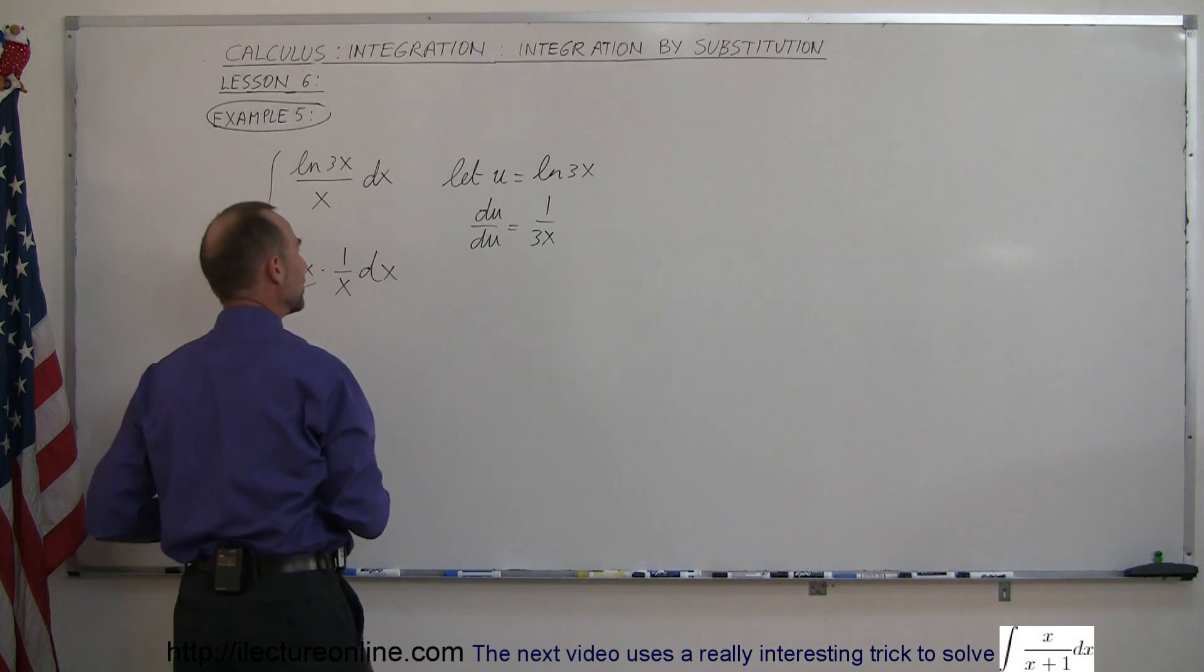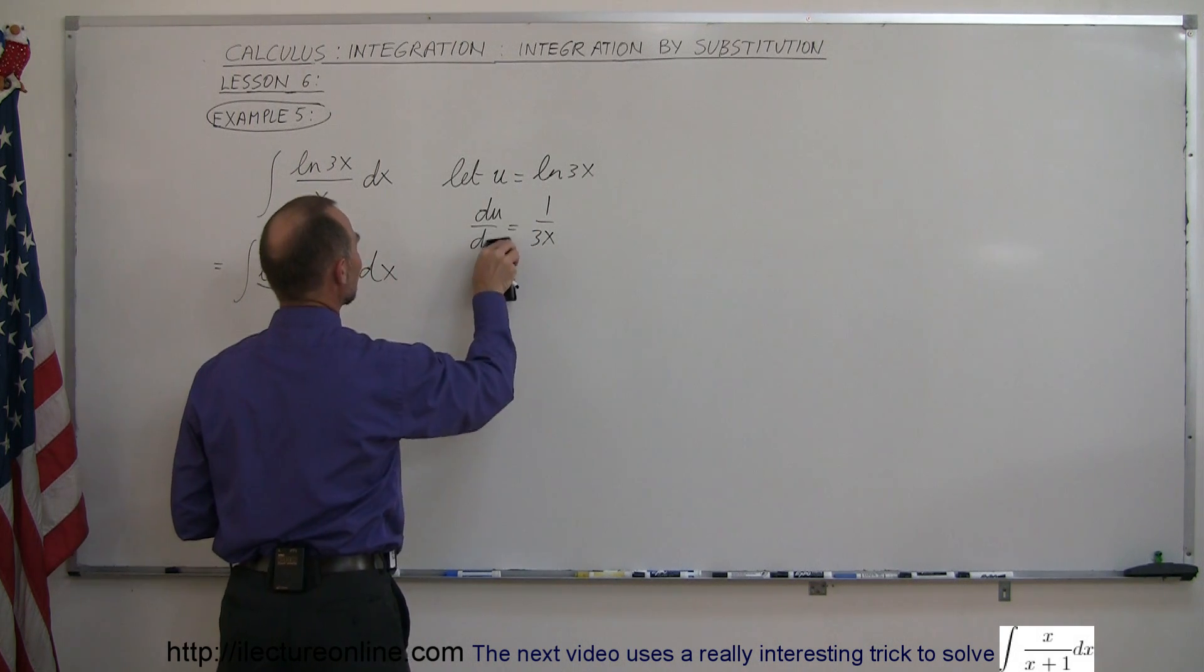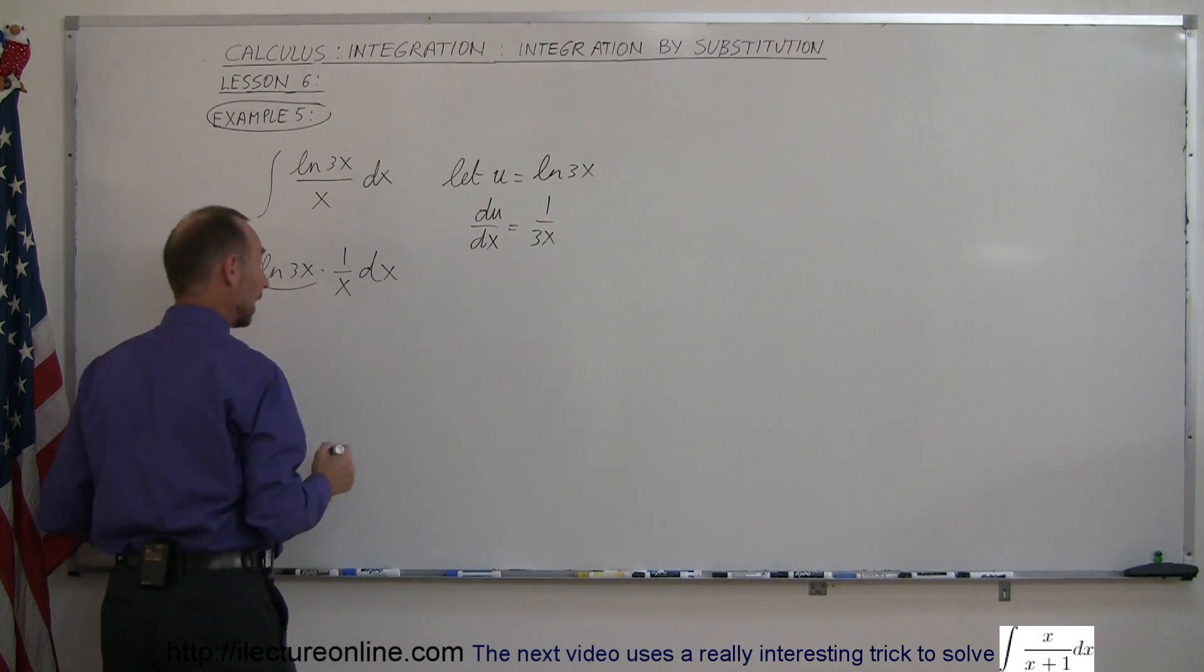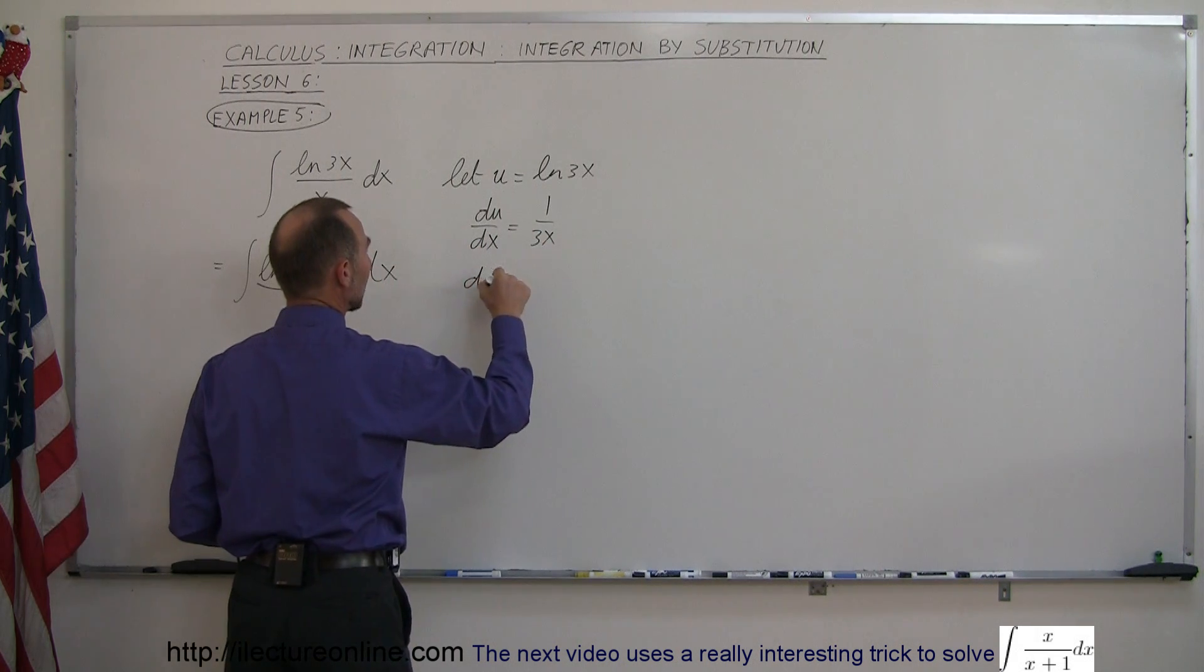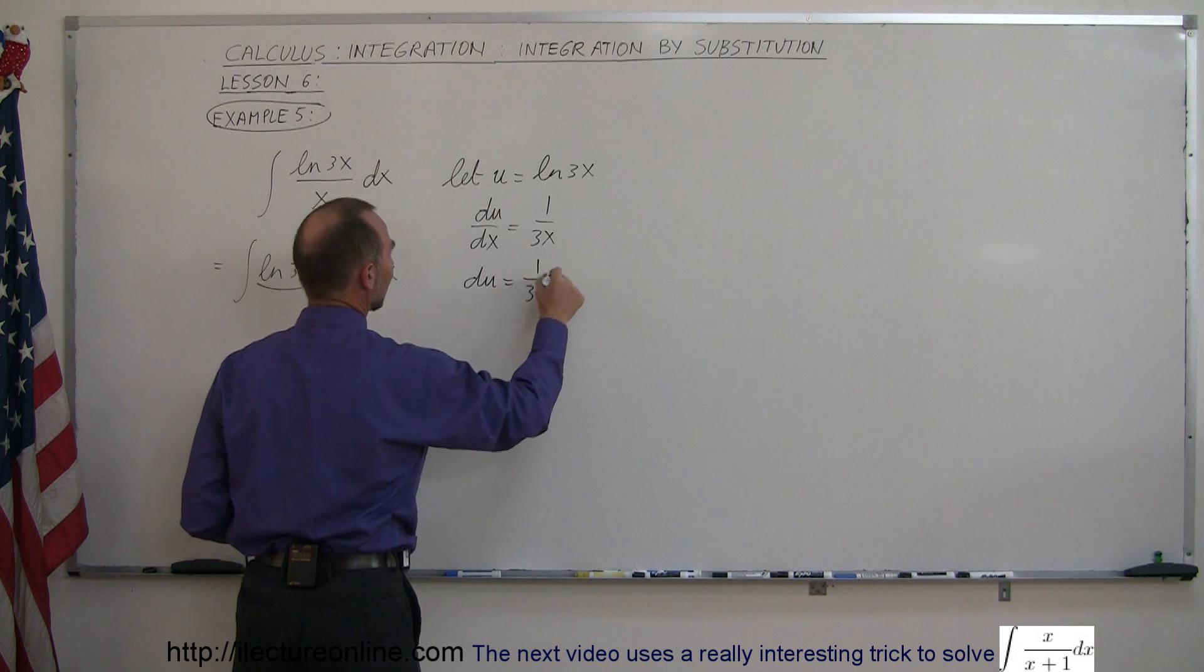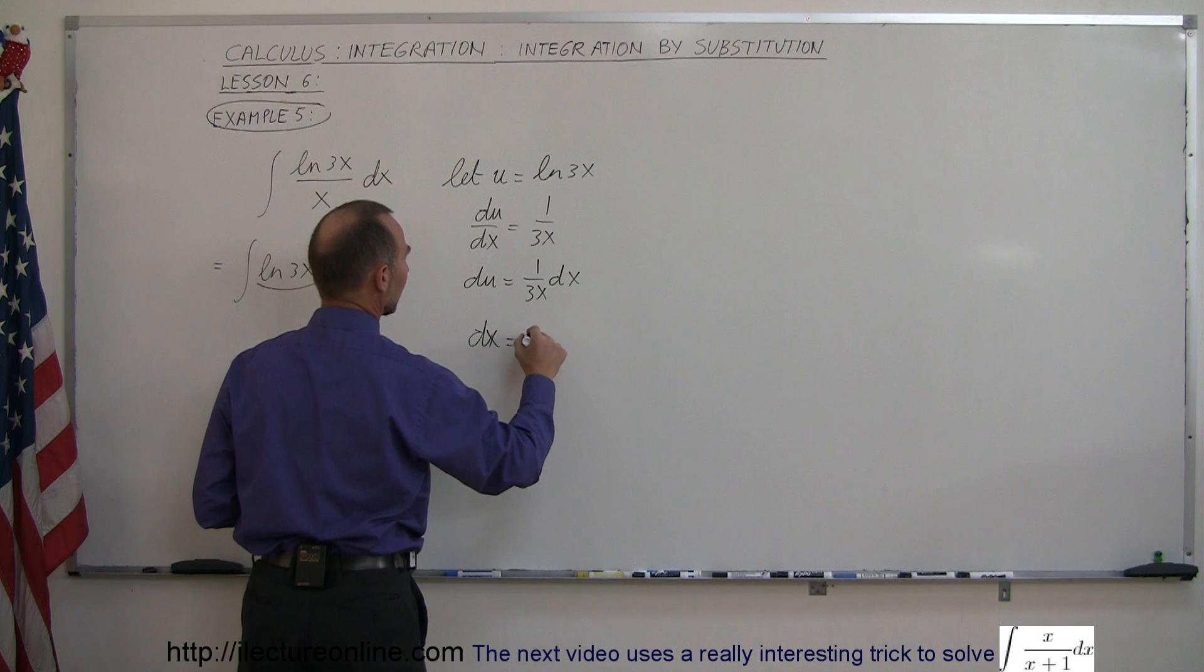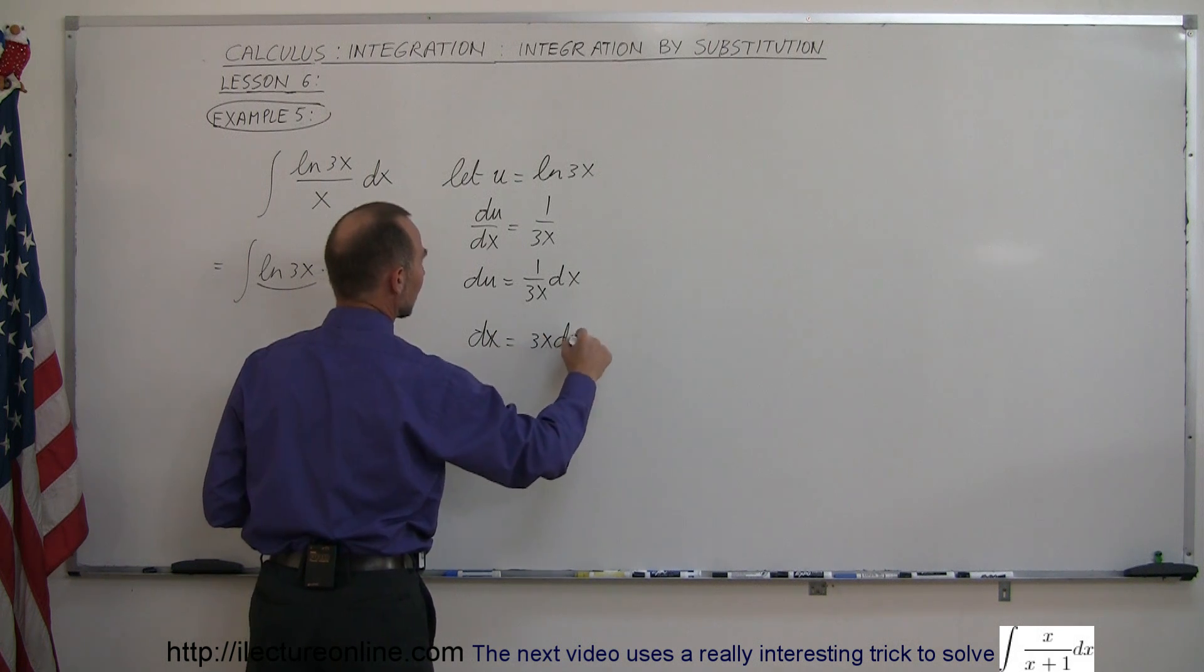I say du dx, and I write du du, that doesn't work. du dx is equal to 1 over 3x, and so then I can say that du is equal to 1 over 3x times dx. And then finally, dx is equal to 3x times du.